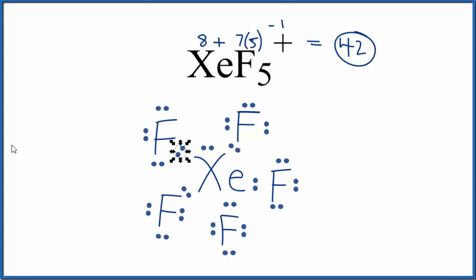When we do that, it has 12 valence electrons, but again, it can have an expanded octet. So we've used all 42, each fluorine has an octet. The central xenon has 12 valence electrons, but that's okay. So this is the Lewis structure for XeF5+.